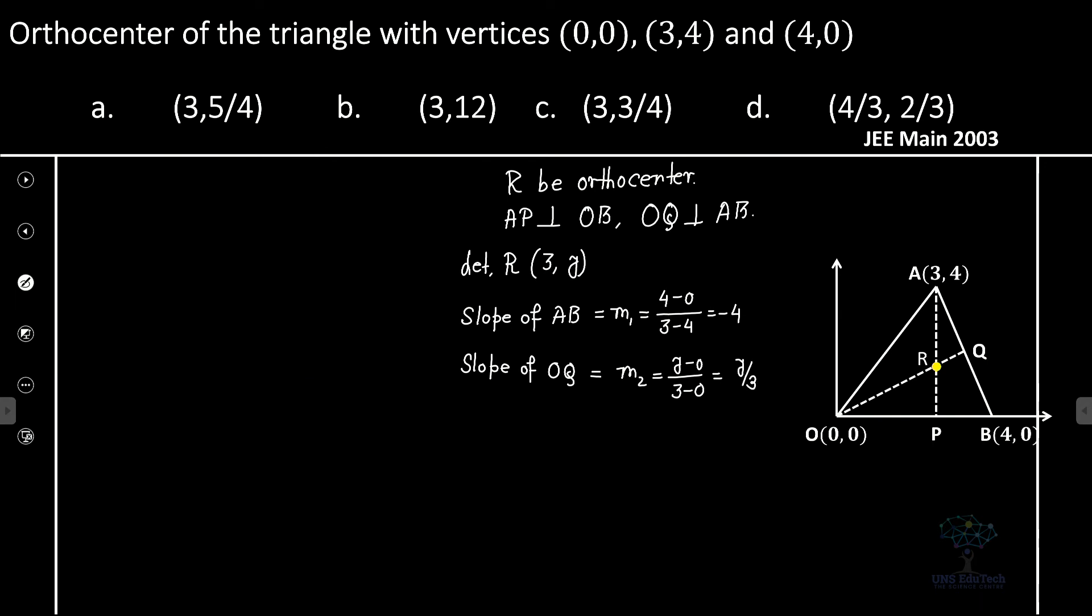Now given that OQ is perpendicular to AB. Now as they are perpendicular, that's implying that the product of the slopes M1 M2 is equal to minus 1. That implies that y divided by 3 is equal to, obviously minus 4 needs to be multiplied. So M1 into M2 that's equal to minus 1. That implies that y is equal to 3 divided by 4. So that's the value of y.